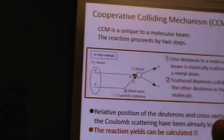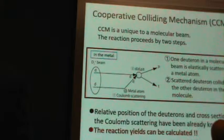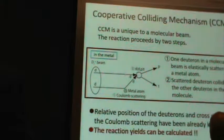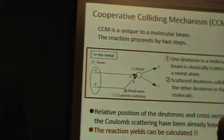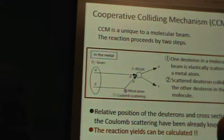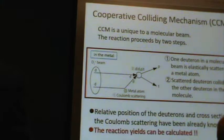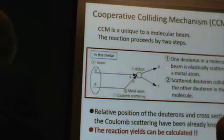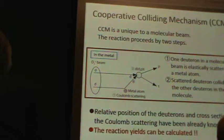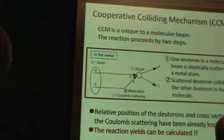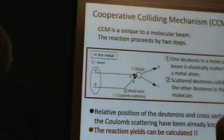We use a new mechanism for experimental experiments. We call it counter-colliding mechanism, CCM. CCM is unique to molecular beams, and the reaction proceeds by two steps. This figure shows the schematic configuration of CCM. First, one deuteron in a molecular beam is elastically scattered by a metal atom. Second, the scattered deuteron collides with the other deuteron in the same molecule to cause the DD reaction.